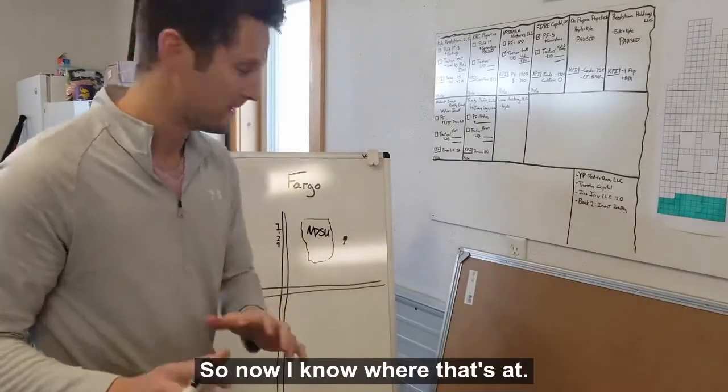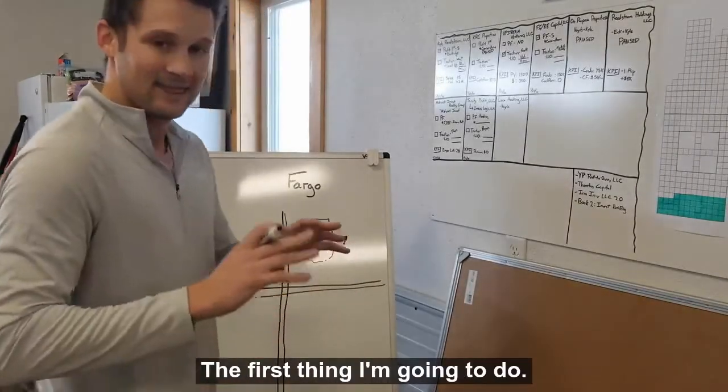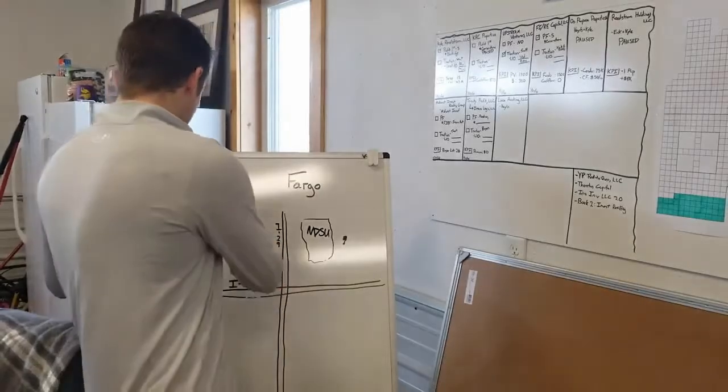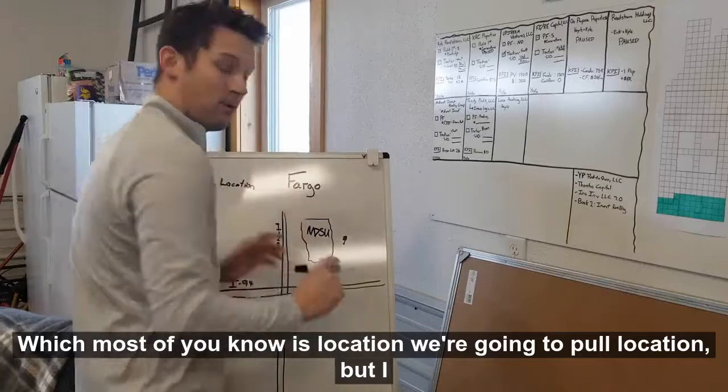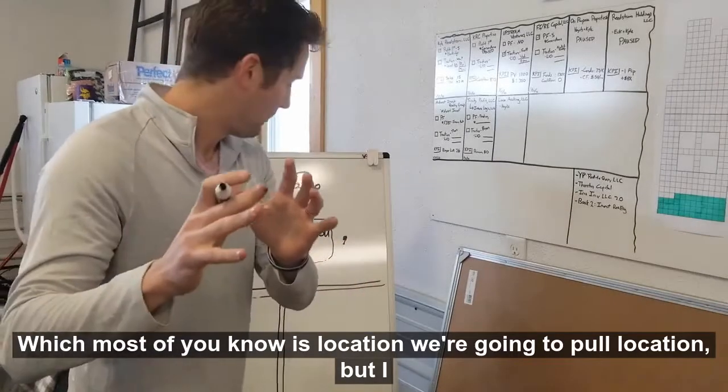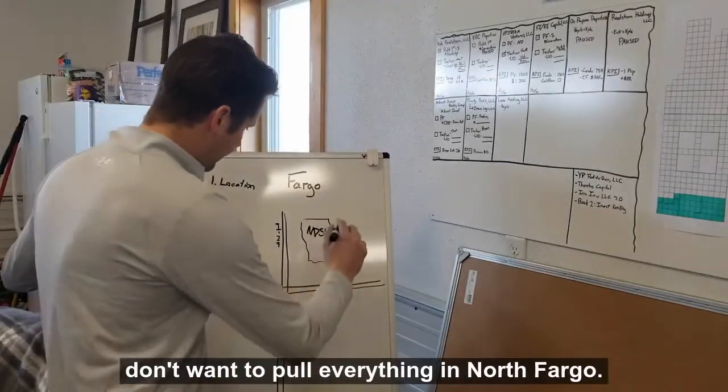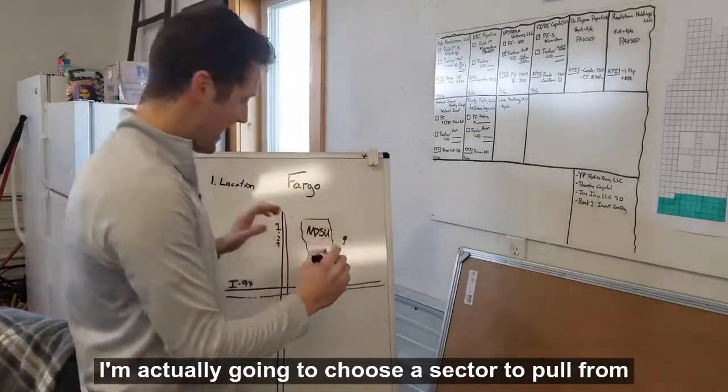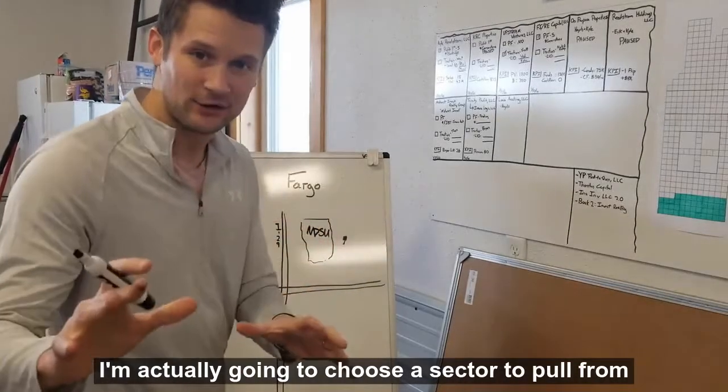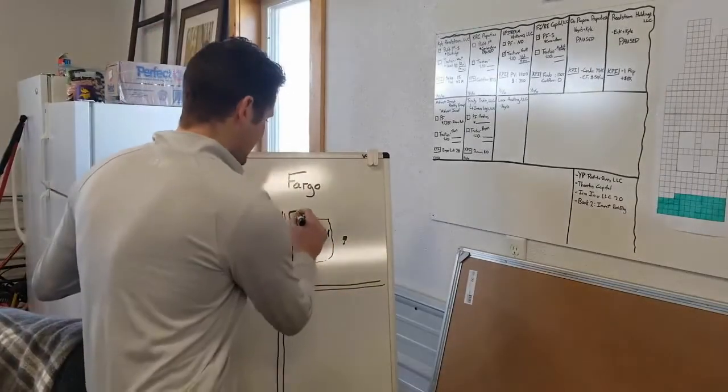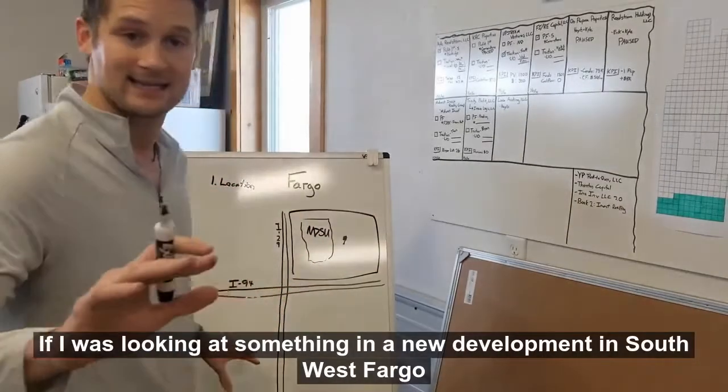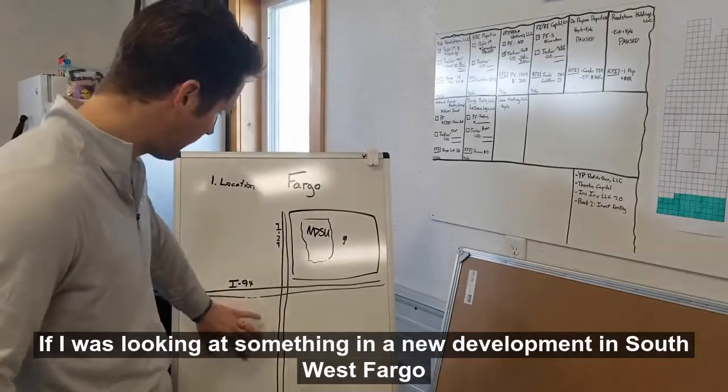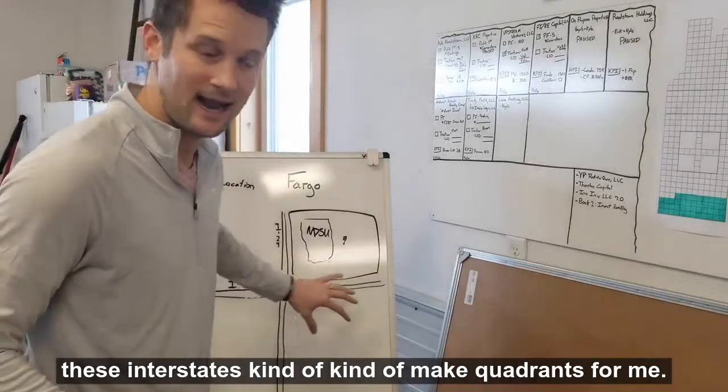The first thing I'm going to do, which most of you know, is location. We're going to pull location, but I don't want to pull everything in North Fargo. I'm actually going to choose a sector to pull from, and this would be my sector on this one. If I was looking at something in a new development in Southwest Fargo, these interstates kind of make quadrants for me.